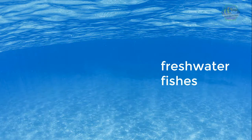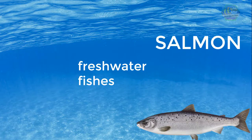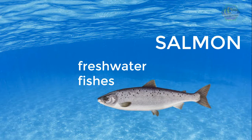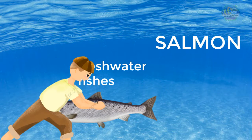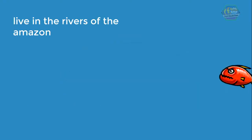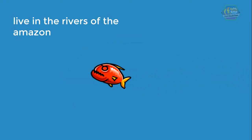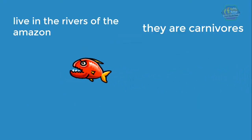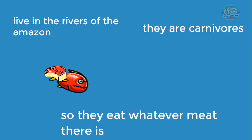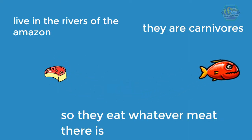One of the freshwater fish is the salmon — sometimes they jump right out of the water and you can catch them. Most piranhas live in the rivers of the Amazon, but don't be afraid of them — they don't really eat humans. They are carnivores, though, so they eat whatever meat is available.